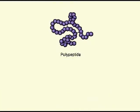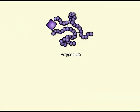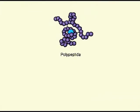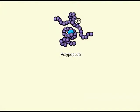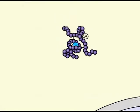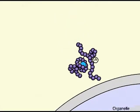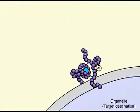Proteins must be modified in some way to produce functional proteins. For example, a polypeptide is cleaved in two, other molecules might be attached to the protein, or the protein might be phosphorylated. Some proteins need to be transported to specific destinations.